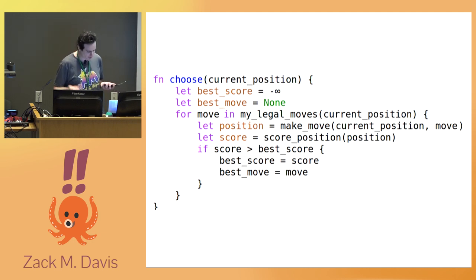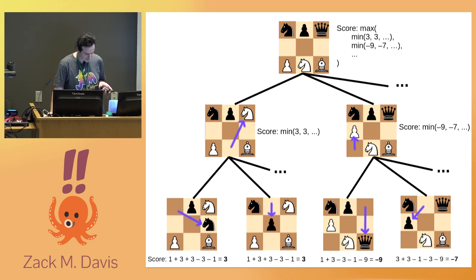So consider a player pondering her move. For every possible legal move she can make, she knows what the board position will look like after that move and can calculate the value of that position. So you might think she should choose the move that results in the best value. For example, if you can capture the opponent's queen, that would make the subsequent board position be worth nine more points.